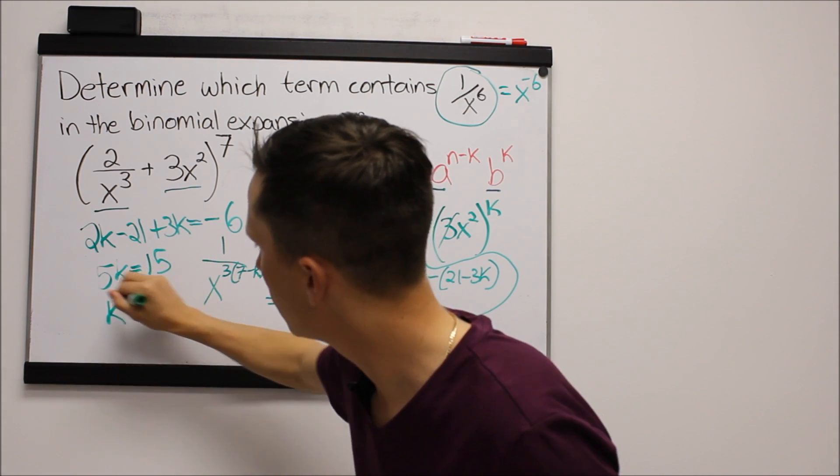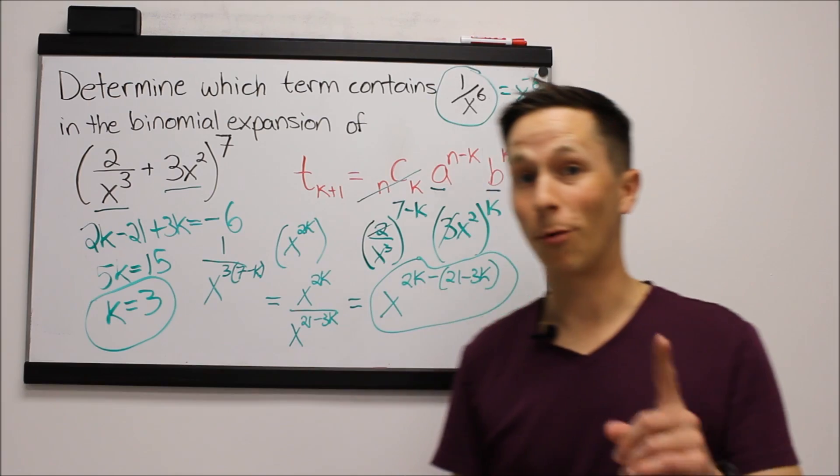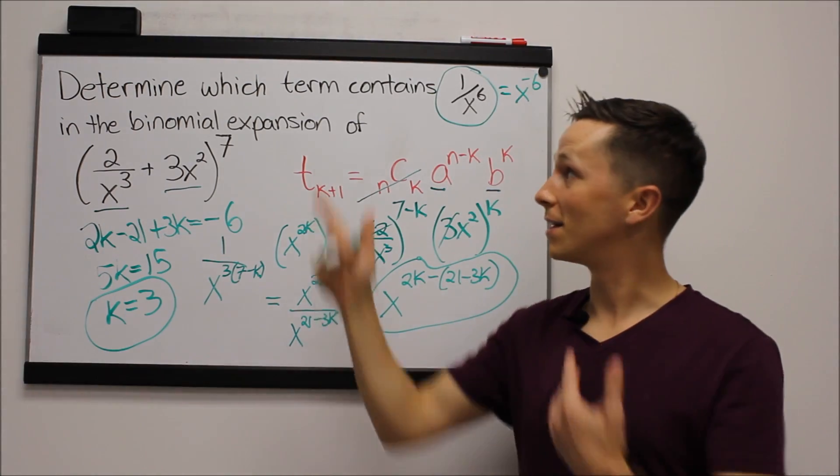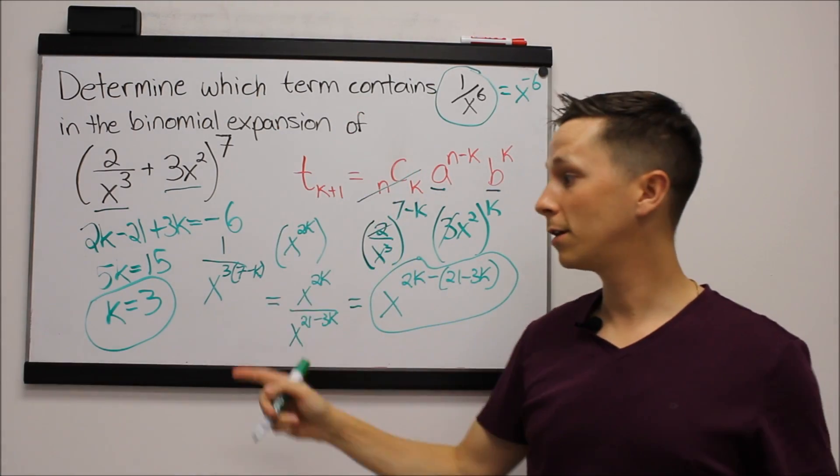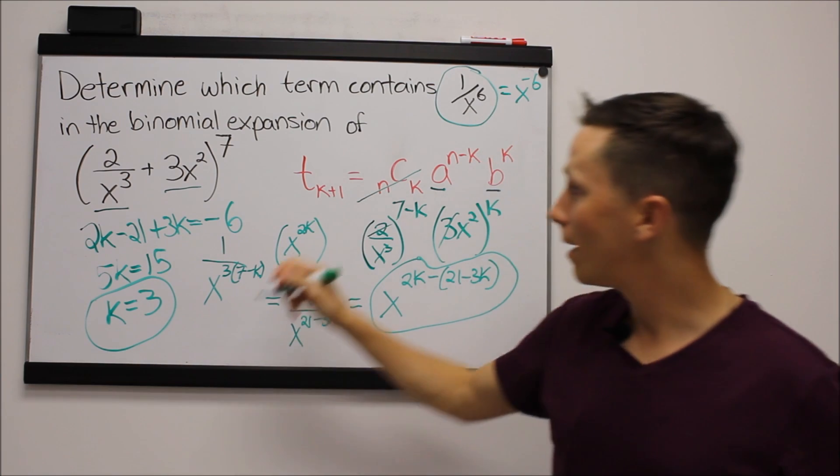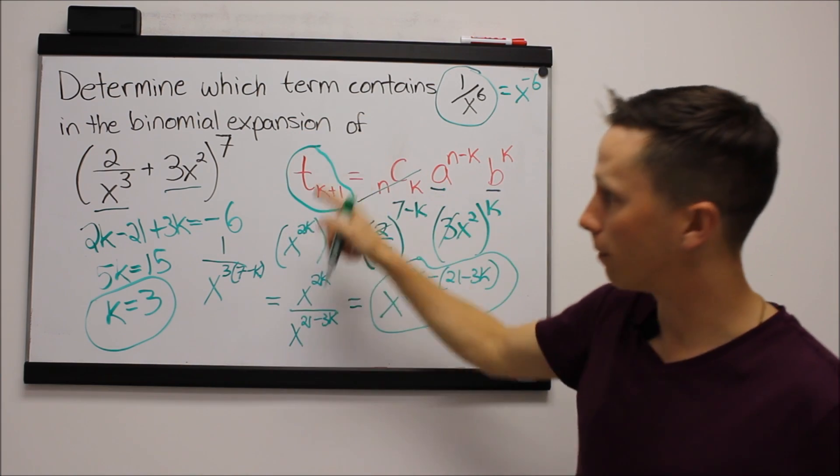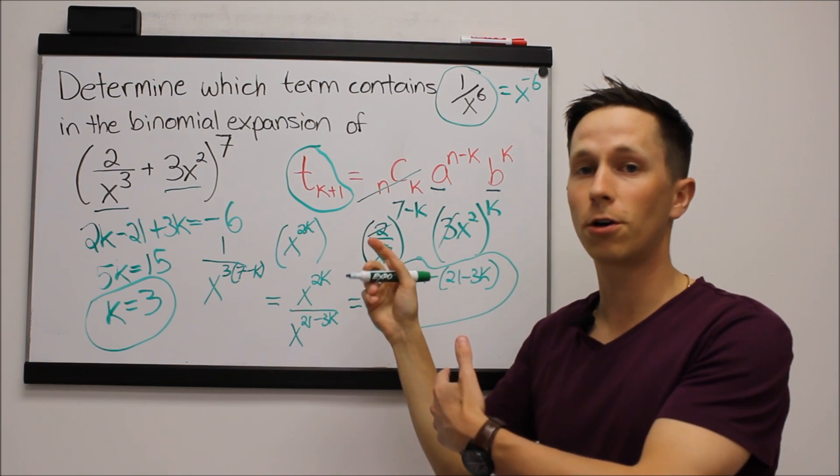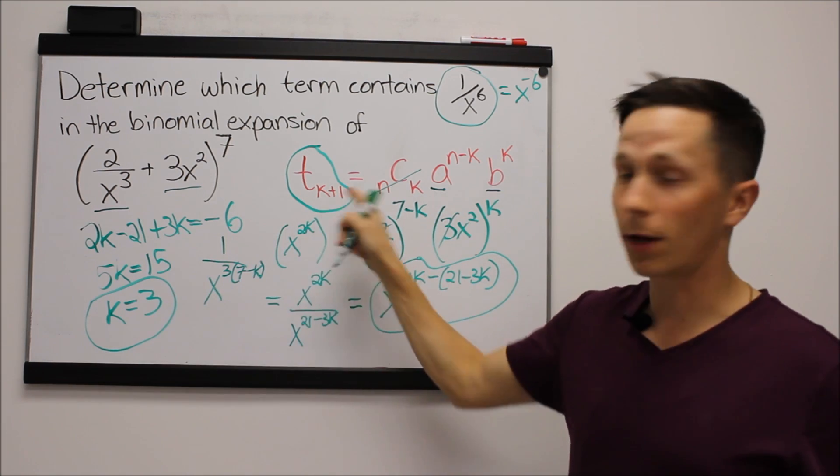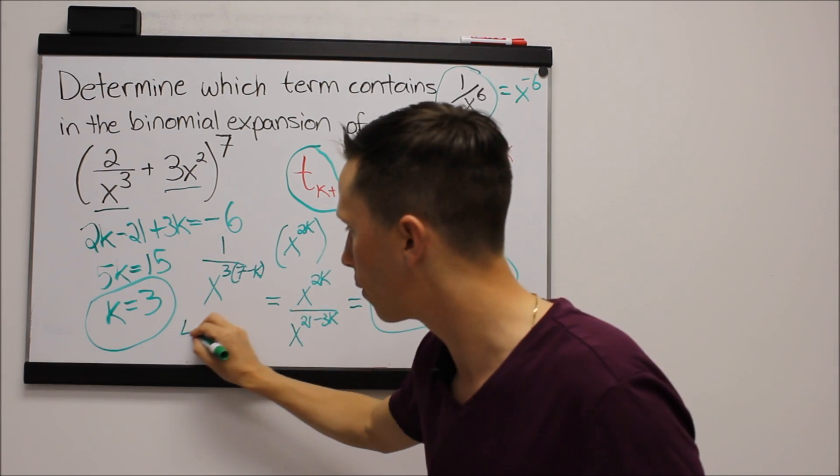So k equals 3. Now the very important piece, the last section—it says which term in the expansion? k equals 3. Remember, the formula on our formula sheet is built for the k plus first term, so we sub 3 back in there, we get 3 plus 1, so this is the fourth term.